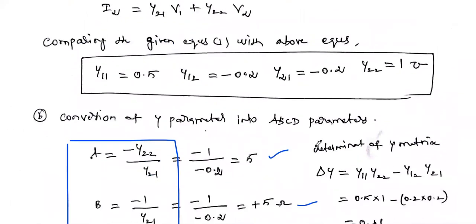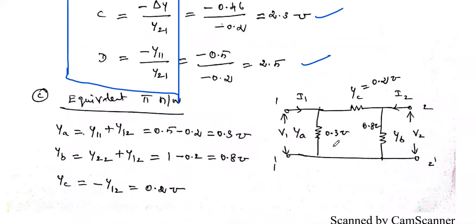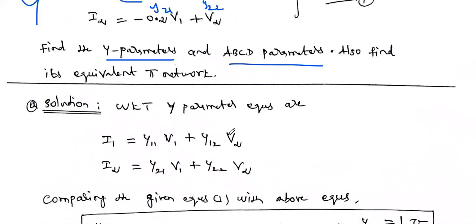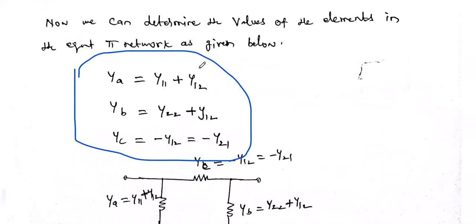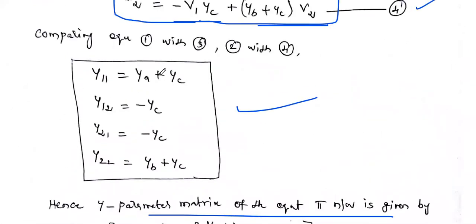This is one type of problem. Similarly, if Y-A, Y-B, and Y-C values are given and we need to find Y11, Y12, Y21, and Y22, we use the reverse formula: Y11 = Y-A + Y-C, Y12 = −Y-C, and so on. That is another type of problem.